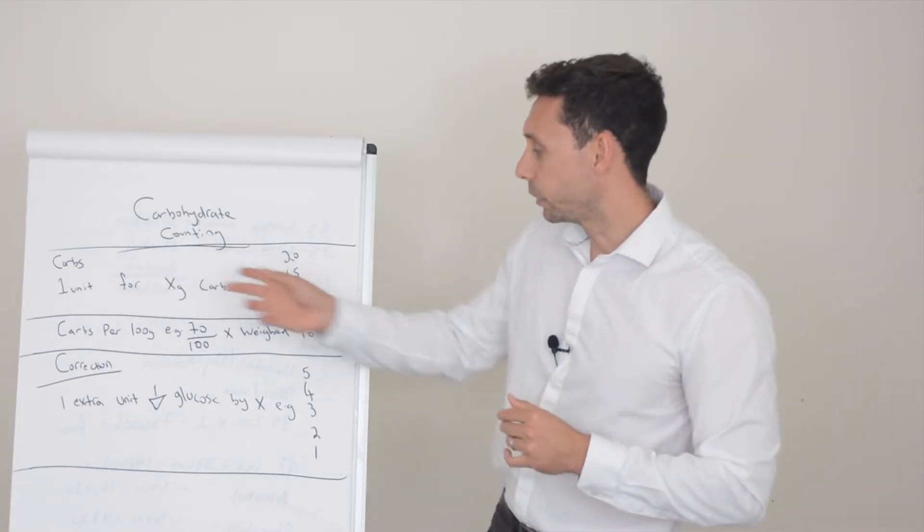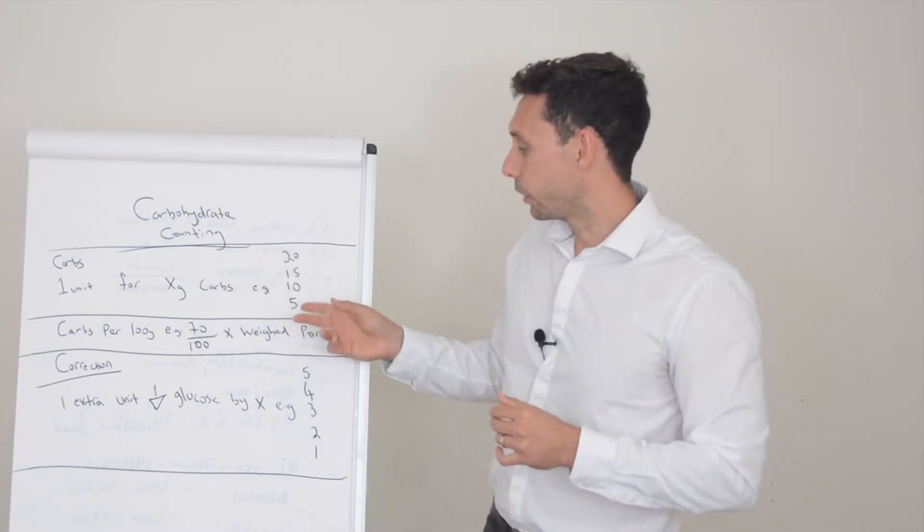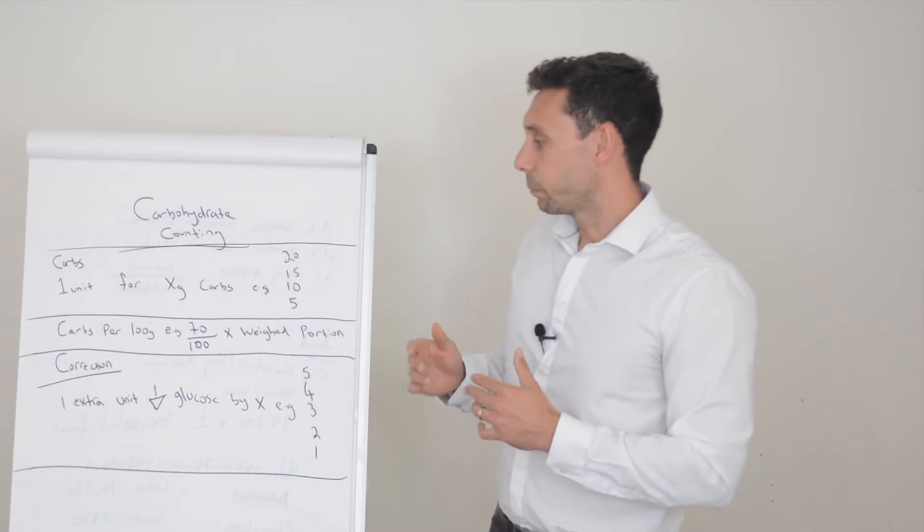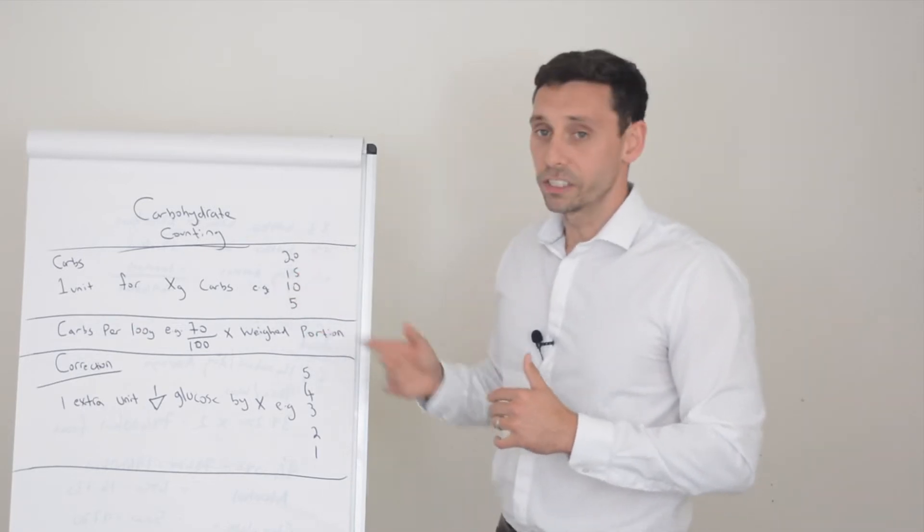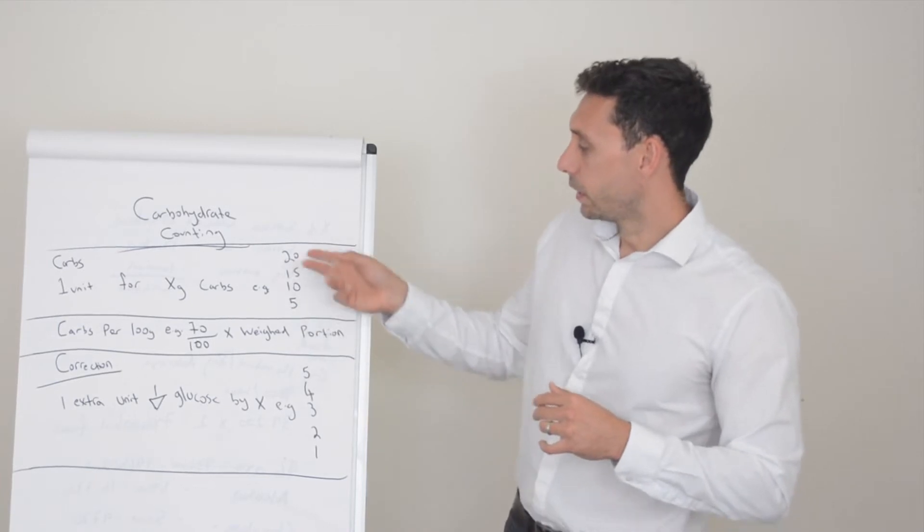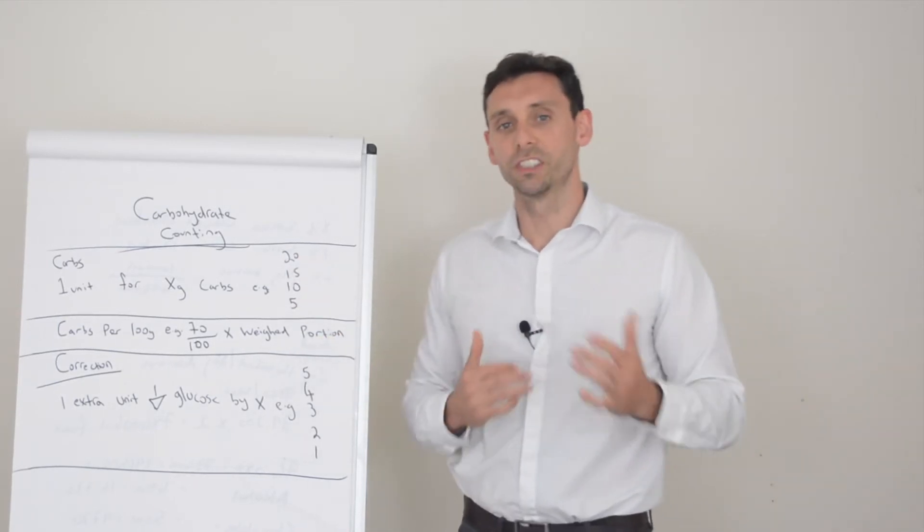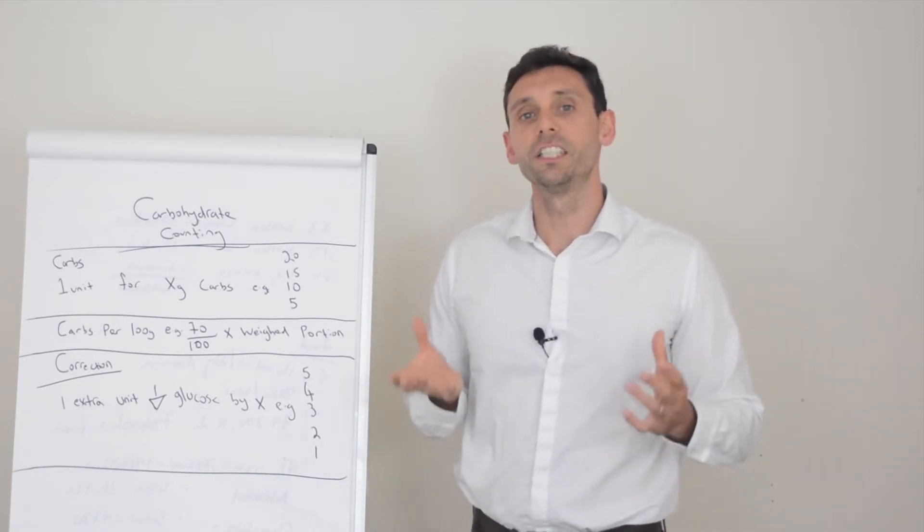Some people will be one unit to 10 grams which is usually a good starting point. Some people will be one unit for five grams which means you're giving more insulin. Some people will be one unit for 15 or 20 grams which means you're giving less insulin. So the higher this number here the more sensitive you are to your insulin. The lower this number here the more resistant you are to your insulin. Essentially you need what you need.